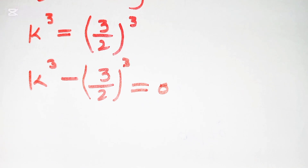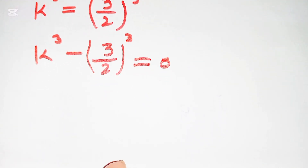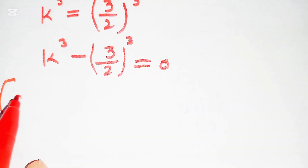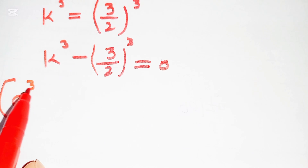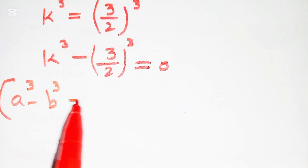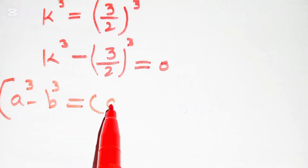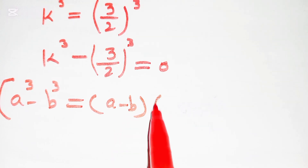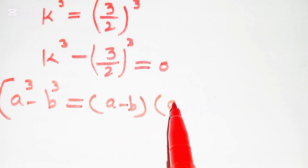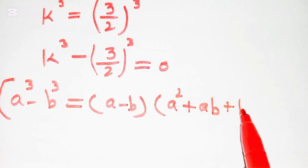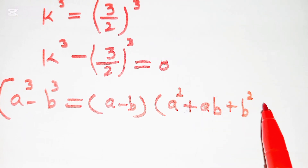We solve this with the algebraic identity: a³ − b³ = (a − b)(a² + ab + b²).